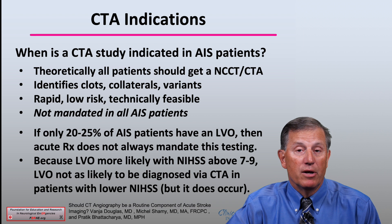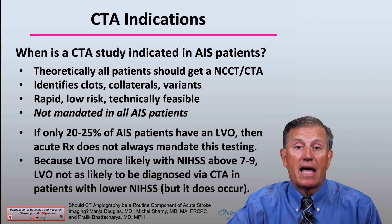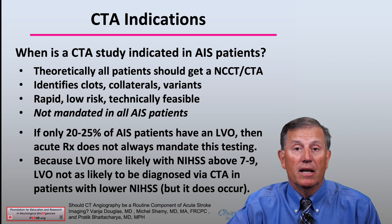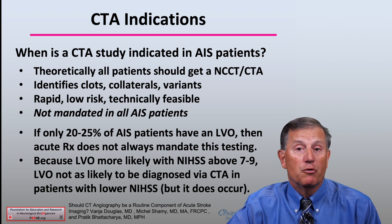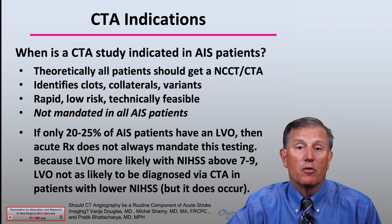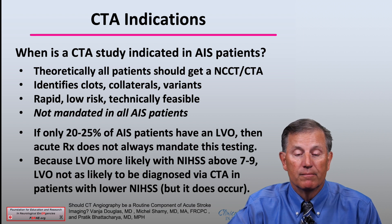Also, we know that in low NIH stroke scale or mild strokes, that an LVO isn't always present — most often it's not present — such that it is not always necessary to have a CTA performed in these patients. The reason I bring this up is because if you're in a center that treats patients but you do not have the ability to perform CTA, it may still be possible to optimally treat patients with acute ischemic stroke, especially when LVOs are not likely as in patients with low severity stroke.